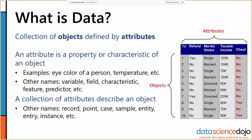What is data? Data is a collection of objects defined by attributes. Attributes are the properties or characteristics of our objects. In a table, a data object is a row and a data attribute is a column. Examples of attributes include eye color, temperature, whether someone filed for a tax refund, and their taxable income.